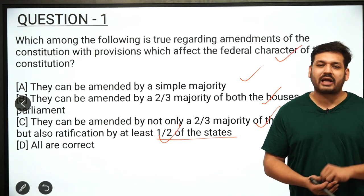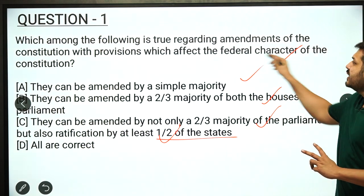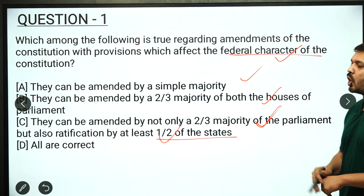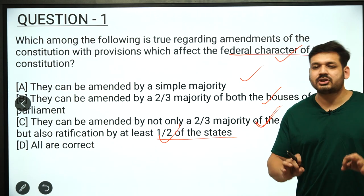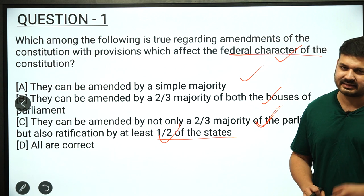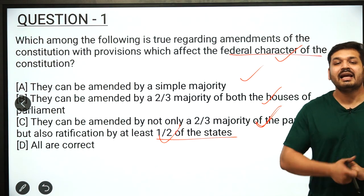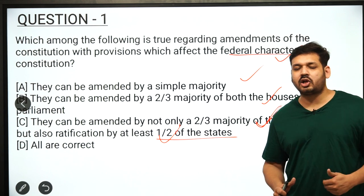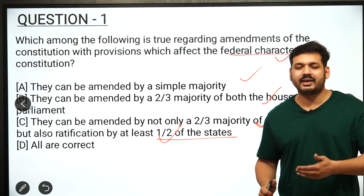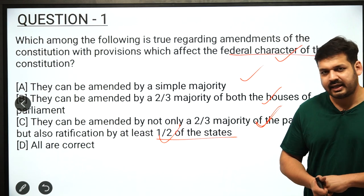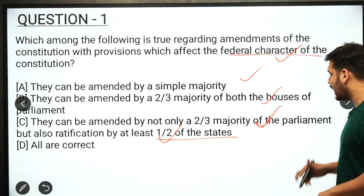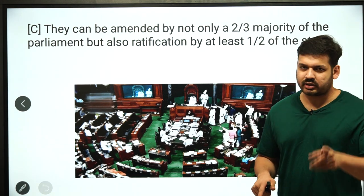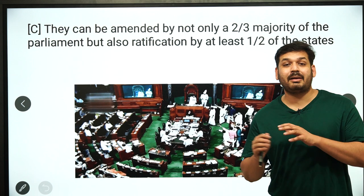The correct answer is option number C. Many people have marked it — yes, you are correct. Option number C is the correct answer. Let us know in the comment box. You can see the amendment of the Constitution. If you have left the amendment of the Constitution, let us know the second answer.